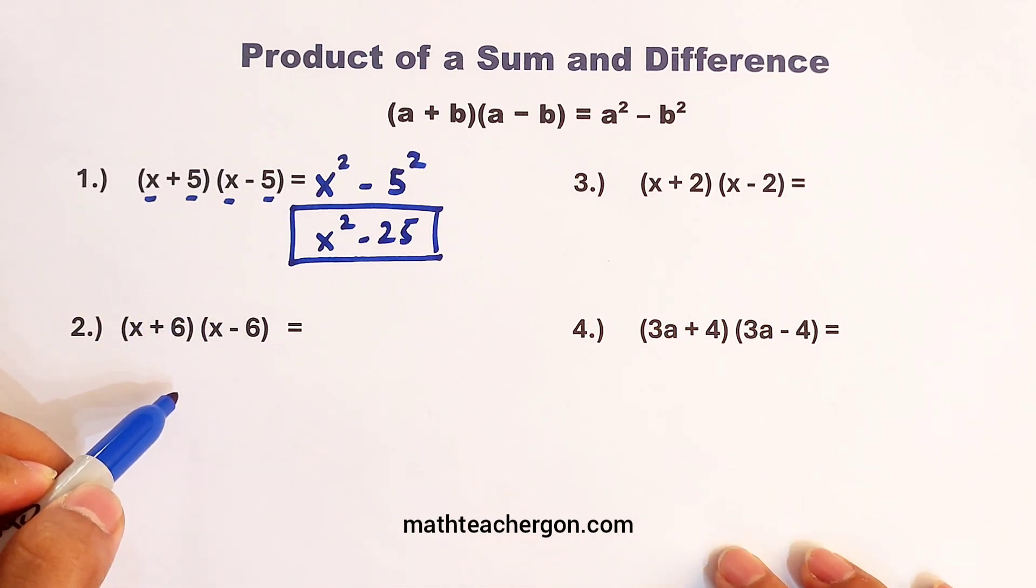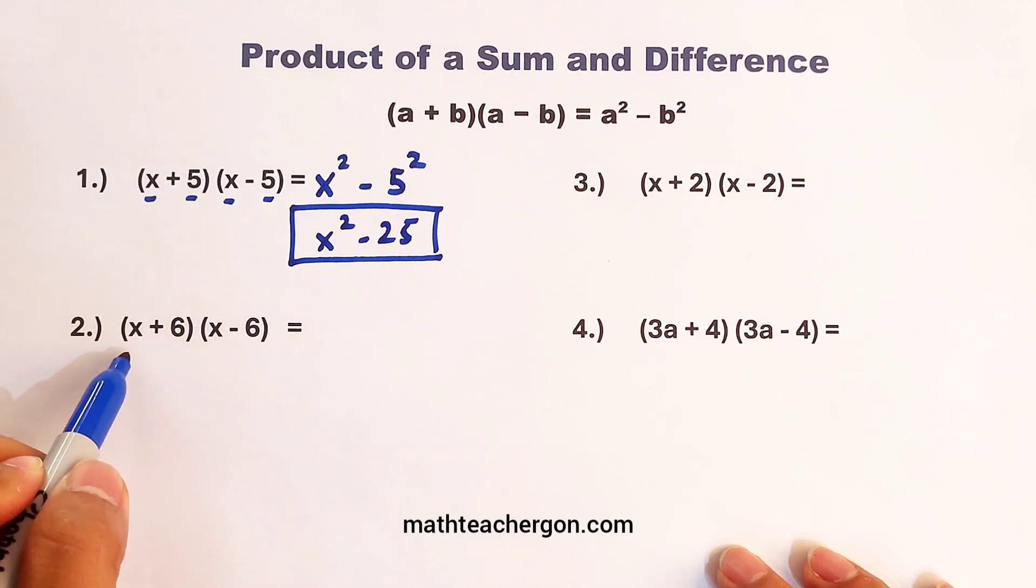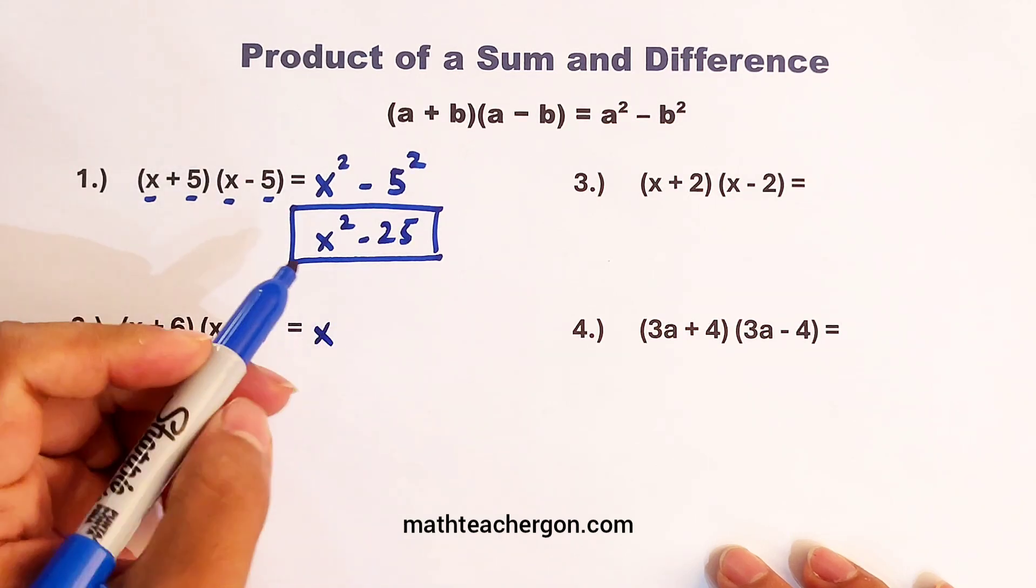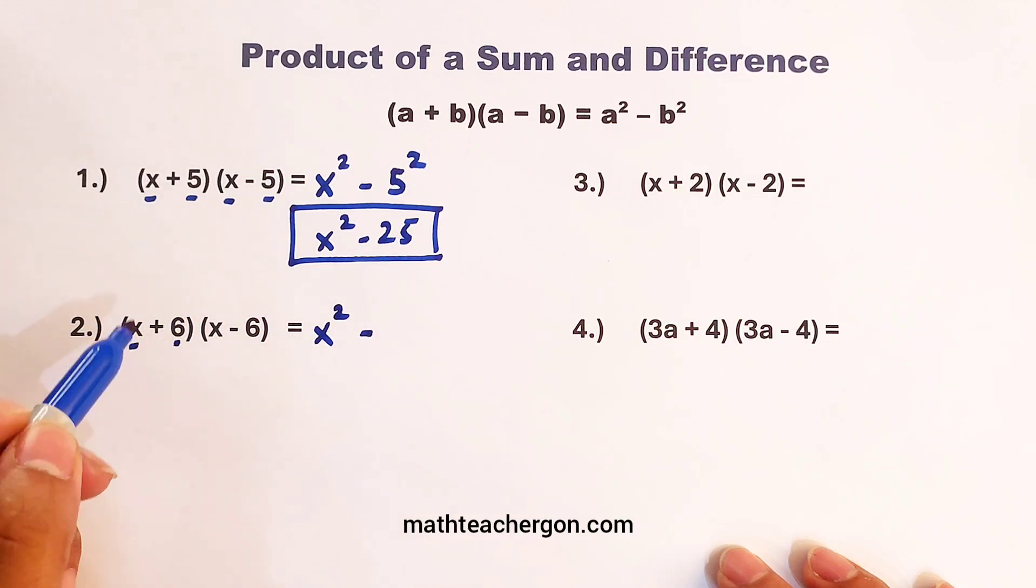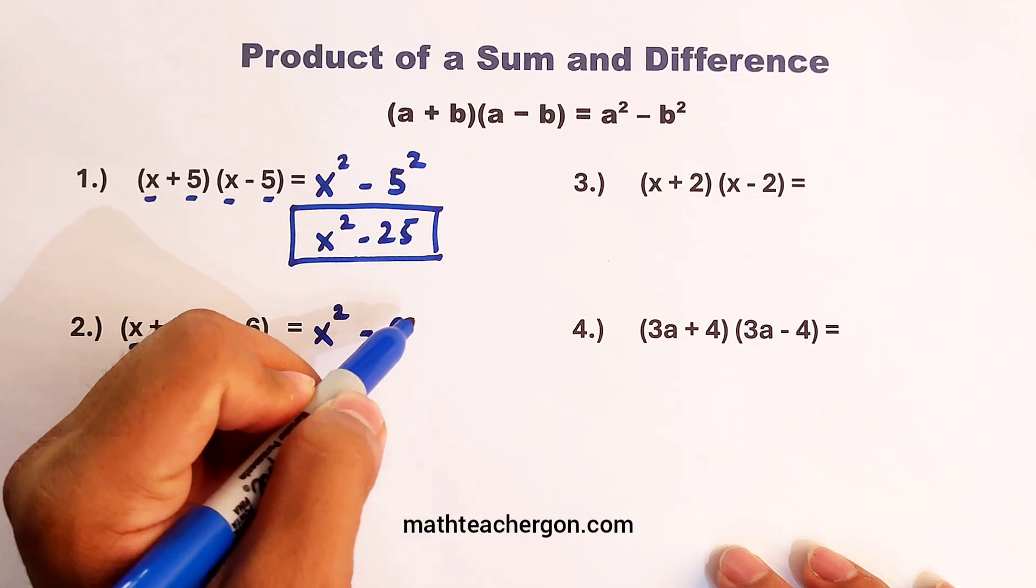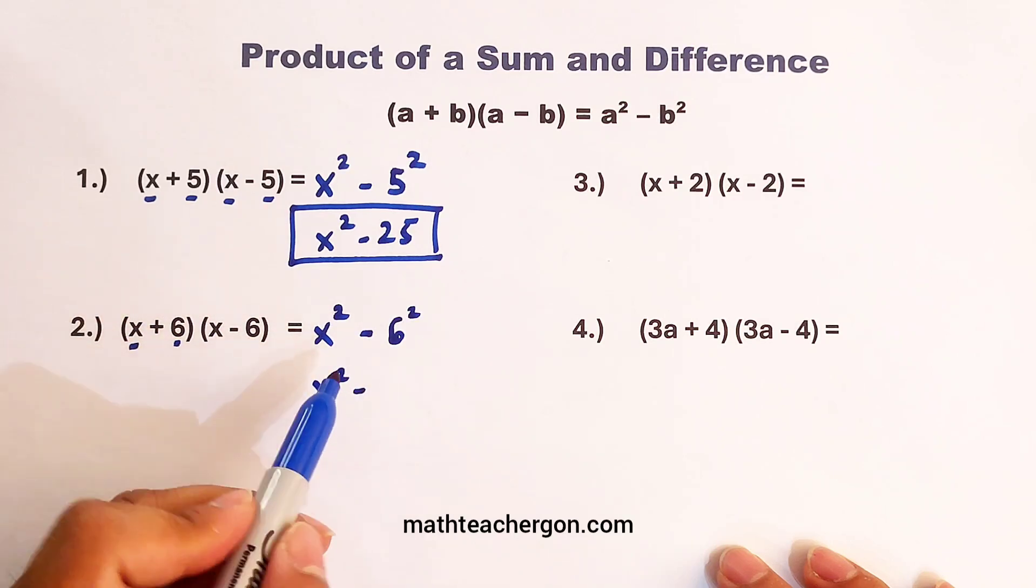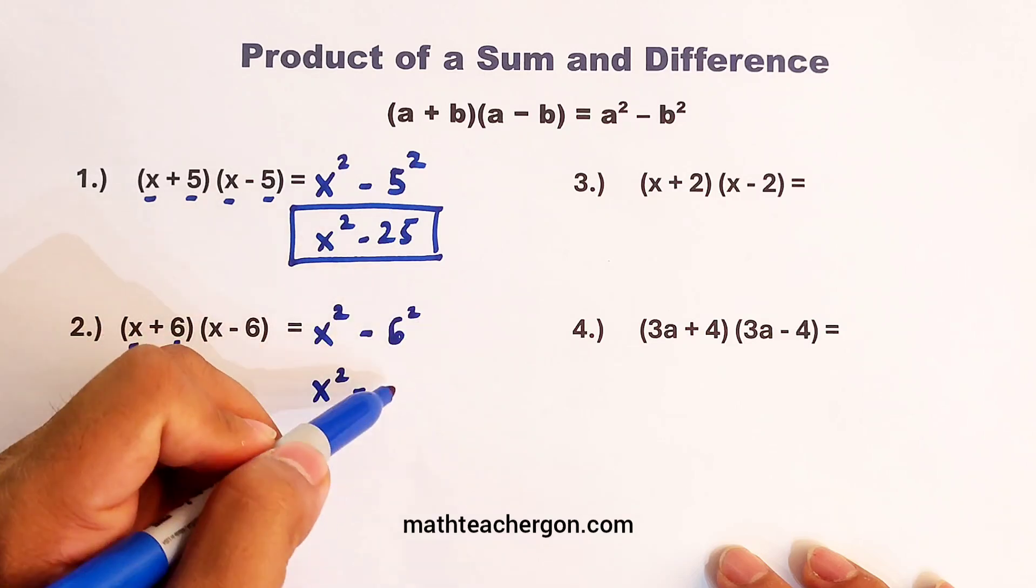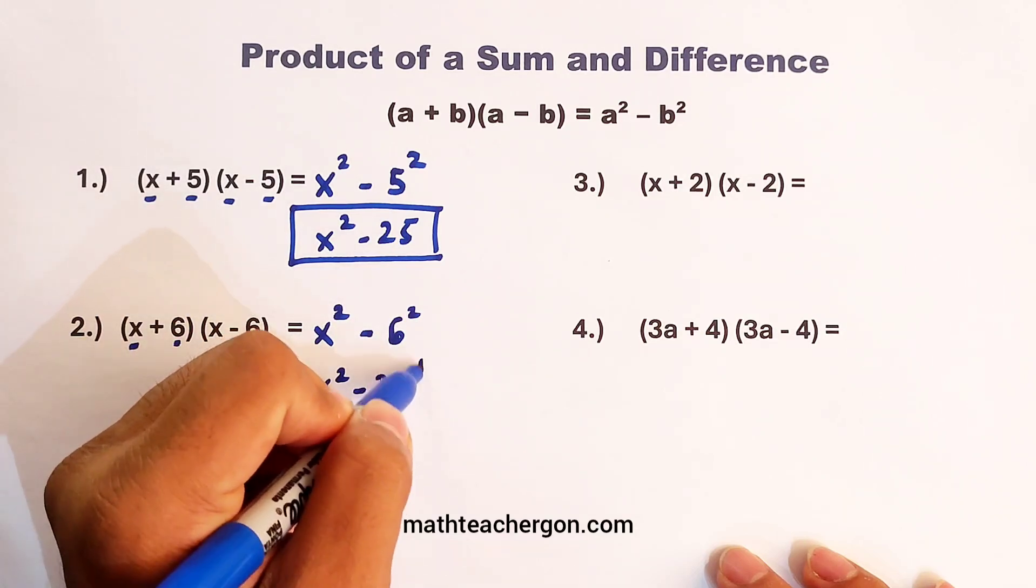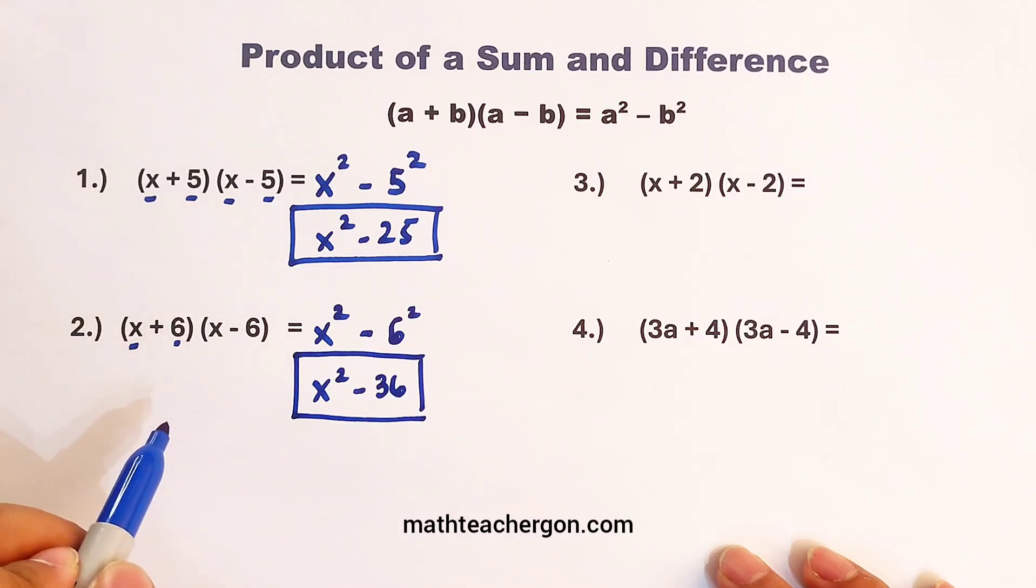Now let's move on with item number two. x plus 6 times x minus 6. Same pattern, get the first term, x, square it, minus, get the second term, which is 6, square it. This is x squared, minus 6 squared is the same as 6 times 6. So that will be 36. And now, this is the product of these two binomials.